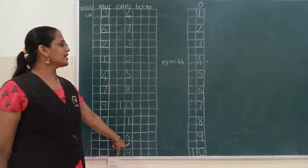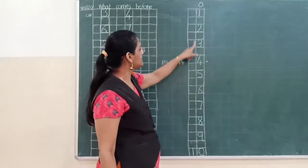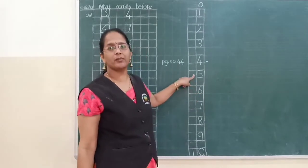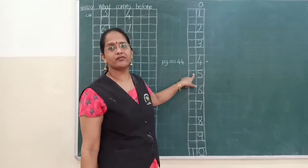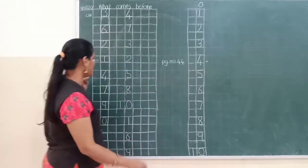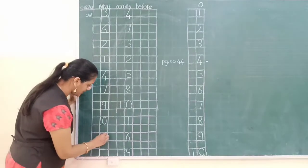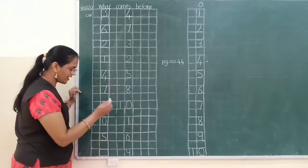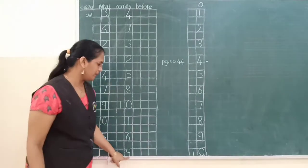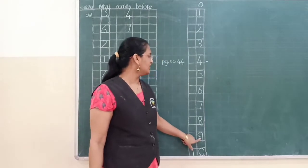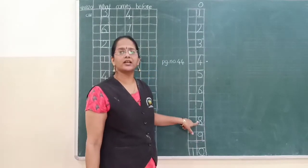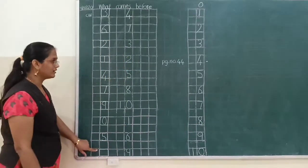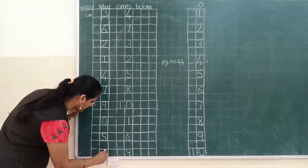Then number six. Now see — where is number six? Here. So number six likhne ke pehle humne kaun sa number likha? Number five. So number five comes before number six. Number six ka before number hai? Five. Then number nine. See, where is number nine? Here. So nine likhne ke pehle humne kya likha tha? Number eight. So here we will write number eight.